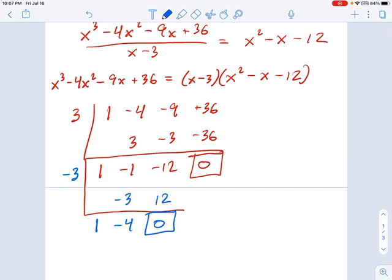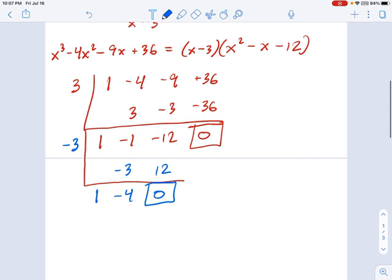I'm glad to see 0 because that means, yes, x plus 3 is also a factor. Now what do we have? Now we can rewrite this thing as x cubed minus 4x squared minus 9x plus 36 equals, here was that first factor we pulled out, x minus 3. Remember, that was this guy.